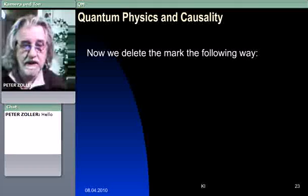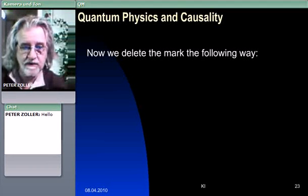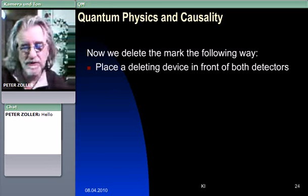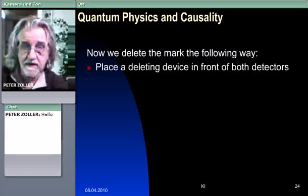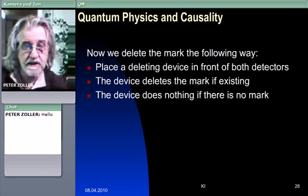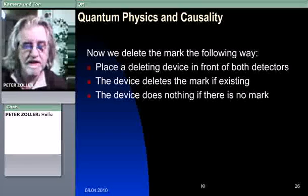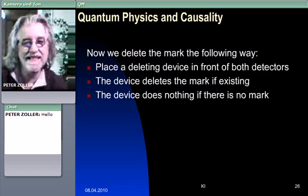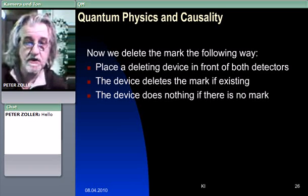Now, a new idea comes: delete the mark of this photon the following way. Place a deleting device in front of both detectors, behind the semi-transparent mirror, but in front of both detectors. And this device has the following property: the device deletes the mark if there is a mark there, if one exists, and it does nothing if there is no mark. So after this cleaning thing here, there are no marks, and the information which photon went which way is deleted. Such a thing is called a quantum eraser.